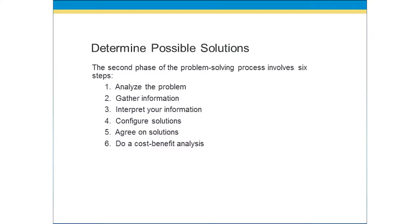The second phase is determining possible solutions. This process, as I said, can be exciting. It involves six separate steps. The first one is to analyze the problem. We have to define and ensure that we know what the problem is. By analyzing it, we are breaking it down into understanding the causal effect and looking at all of the parts and pieces of the problem. The problem may involve multiple sub-problems, and you need to analyze it to a depth and breadth that you can now address it.